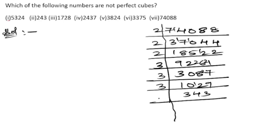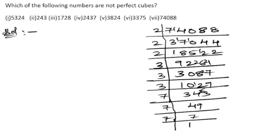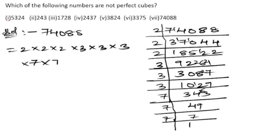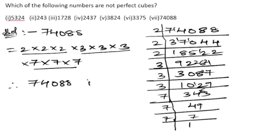Next, 343 is divisible by 7. Dividing gives us three 7s. So the full factorization of 74088 is 2×2×2 × 3×3×3 × 7×7×7. Every prime factor forms a complete group of three, therefore 74088 is a perfect cube.